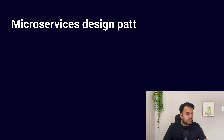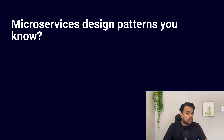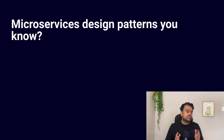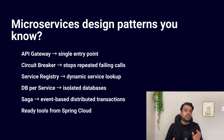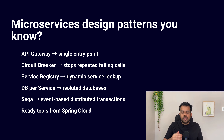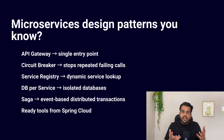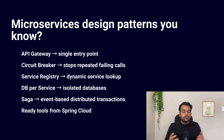Our third question is: explain a few microservices design patterns that you are aware of. This is a very important question asked in many microservices interviews. Give three or four design patterns with a simple use case for each. The first one is the API Gateway pattern. In this pattern, we keep one gateway as a single entry point to all microservices. The client does not call services directly — they call the API Gateway. The gateway then routes the request to the correct service and also handles cross-cutting concerns like authentication, logging, rate limiting, and sometimes response aggregation.